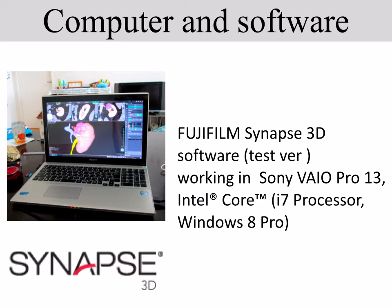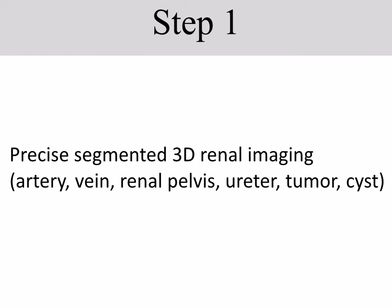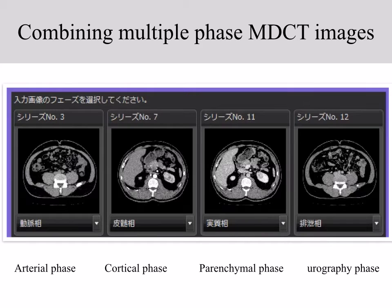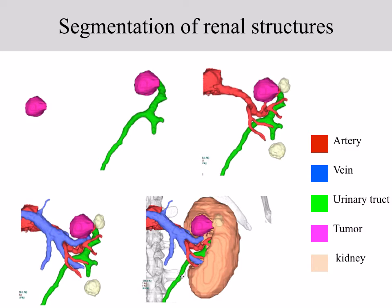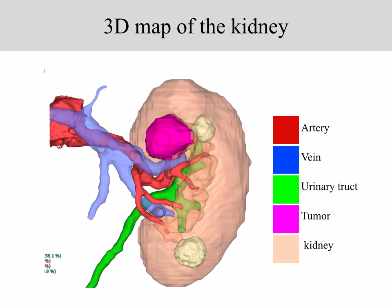We performed the Virtual PN Analysis with Fujifilm Synapse 3D software working on a Sony laptop computer. Usually it takes about an hour to determine the final operation planning. In the first step, we made a precise segmented 3D renal image. We extract the renal anatomical structures from multiple phase CT images to combine them into one renal image. This imaging process is called segmentation. For example, using the arterial phase, renal artery segmentation is performed. Similarly, we segmented the renal vein, collecting system, tumor, and cyst. These segmented 3D images were then combined together into one 3D image, giving us a precise 3D renal map to plan the operation.